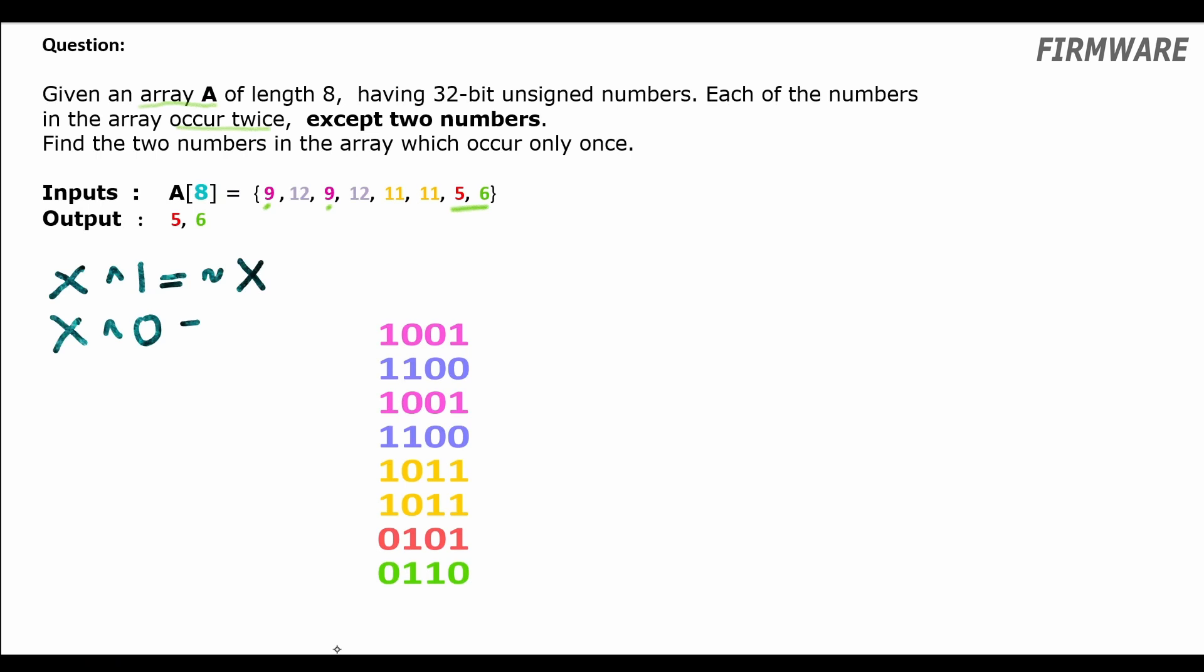So given numbers a, b and c, A XOR A is 0. Why? Because 1 XOR 1 is 0, 0 XOR 0 is 0. So all bits in A being XORed with itself will result in zeros. Now A XOR B XOR A will be equal to B. How? A XOR A is 0 and 0 XOR any bit is that bit itself. So 0 XOR B will be B itself.